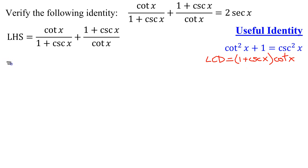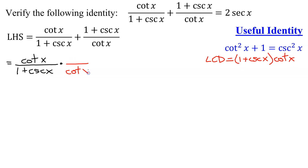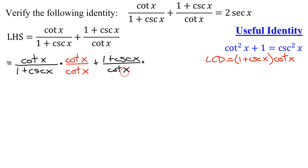Now I need to write both terms on the left-hand side over the LCD. For the first term, cotangent of x over 1 plus cosecant of x, I have to multiply the denominator by cotangent of x, so I also multiply the numerator by cotangent of x, since I'm really only multiplying by 1. For the second term, 1 plus cosecant of x divided by cotangent of x, I multiply the denominator by 1 plus cosecant of x, which means I also multiply the numerator by 1 plus cosecant of x.